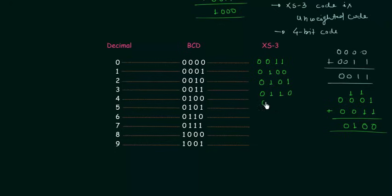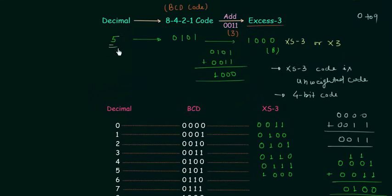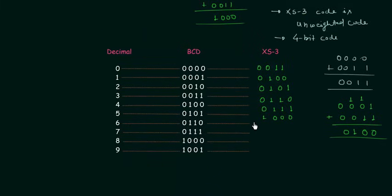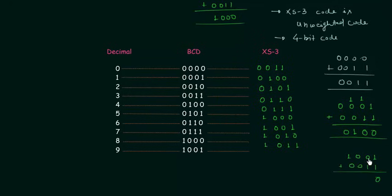For 4 we will have 7, so 0111. For 5 we have 8, which we already evaluated as 1000. For 6 we will have 9 — 6 plus 3 is 9 — so 1001. For 7 we will have 10, so 1010. For 8 it is 11, so 1011. And for 9 we will have 12: 1001 plus 0011 gives 1100. So these are the XS3 codes for decimal digits 0 to 9.